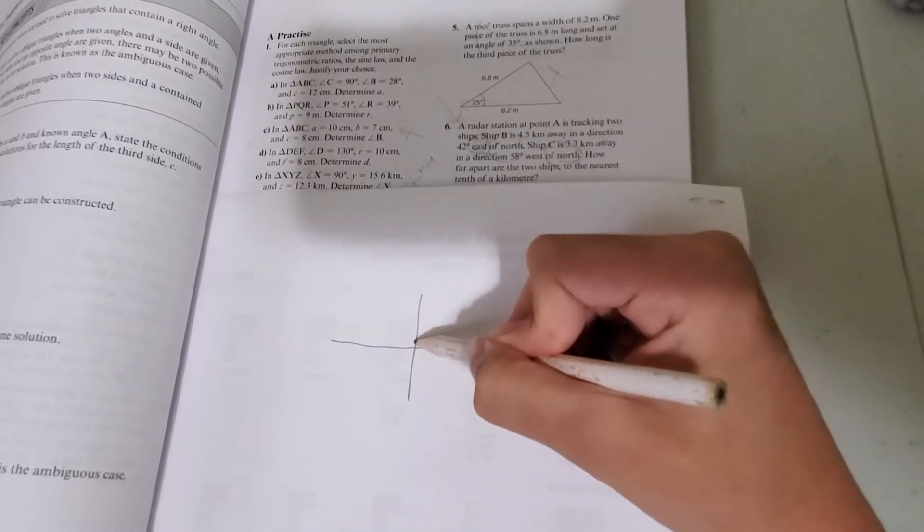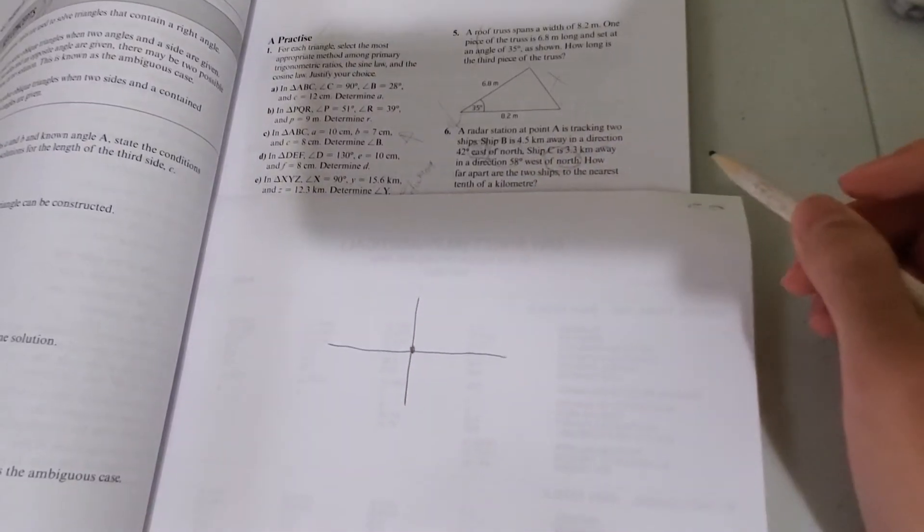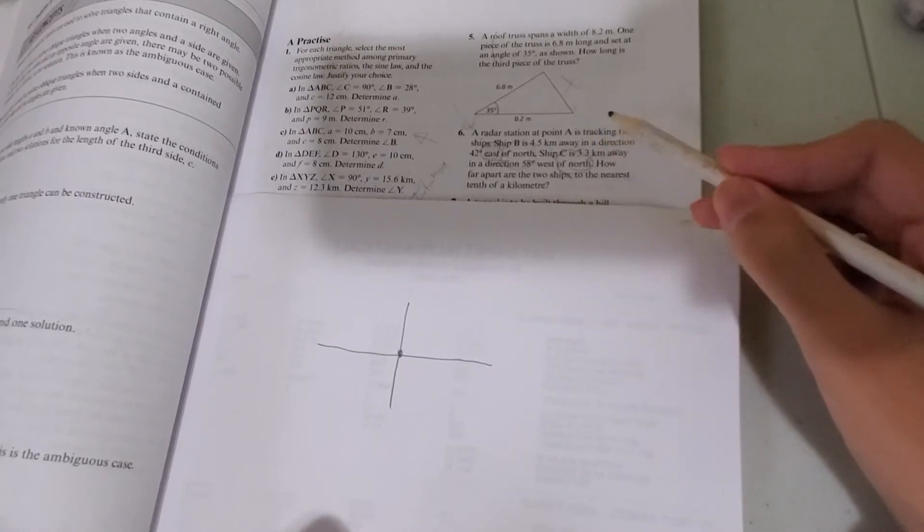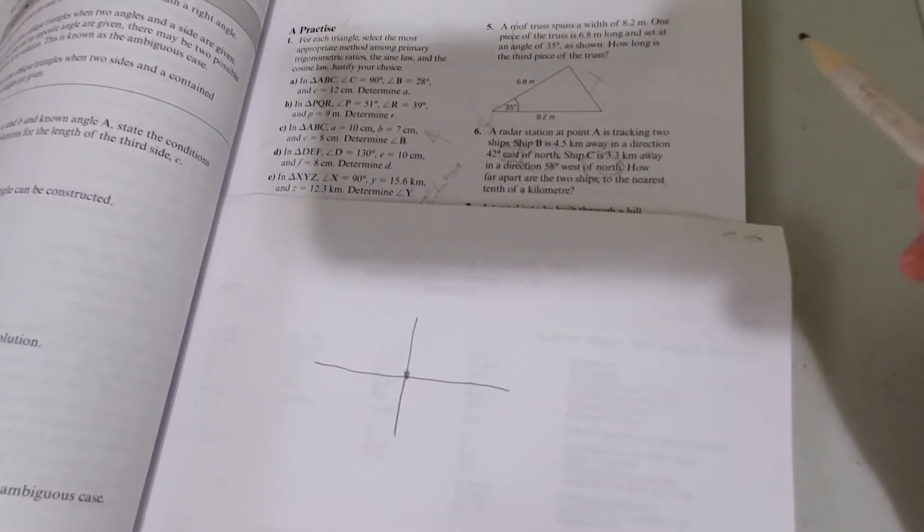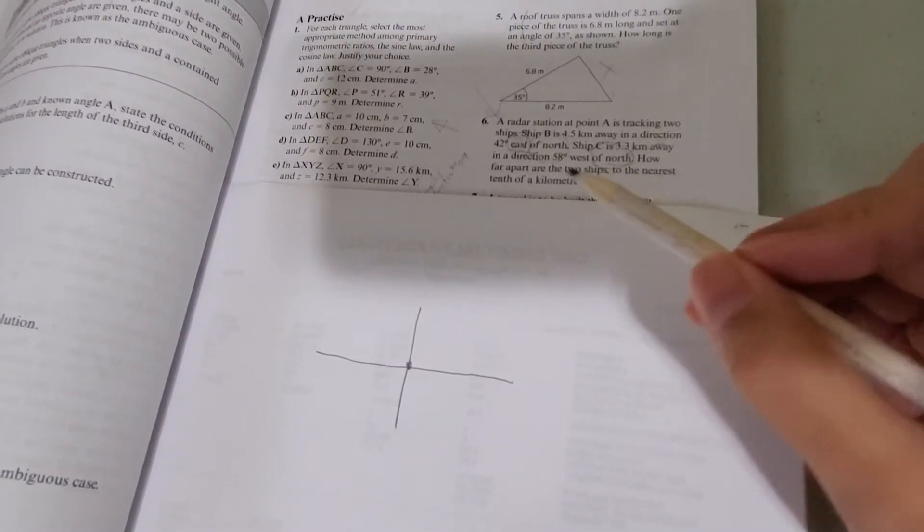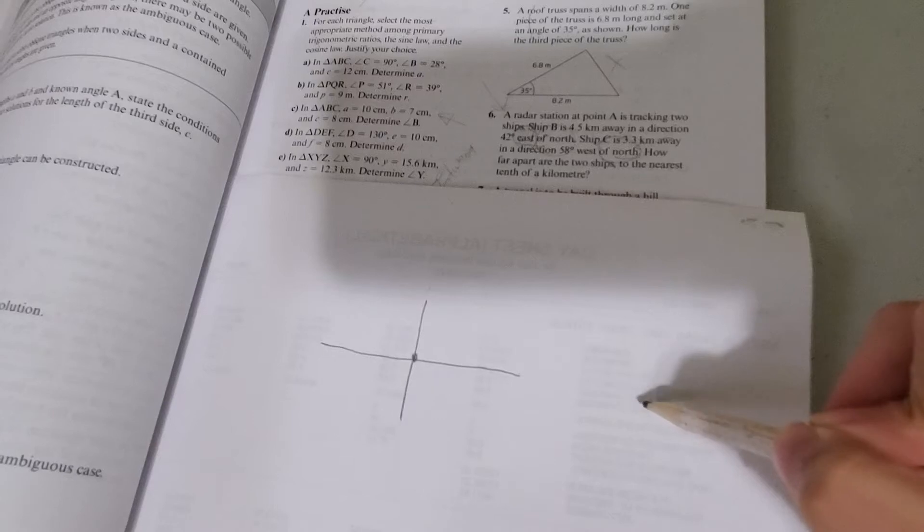A radar station at point A, we can consider point A the origin in this case, since this is the starting mention. And then ship B is 4.5 kilometers away in a direction 42 degrees east of north. Well, we know that north is this way and we know that east is this way.